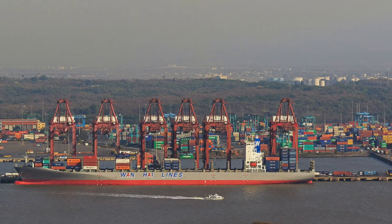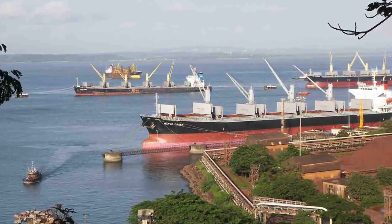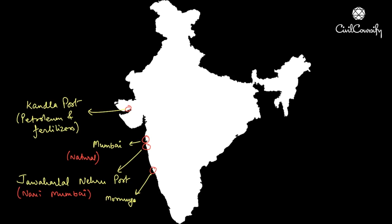Next is Jawaharlal Nehru port in Navi Mumbai. It was built as a satellite port to relieve the pressure of the Mumbai port. Next is the Murmugao port, which is also a natural harbour at the head of the Zawari River in Goa. It caters to the needs of Karnataka, Goa, southern Maharashtra and other adjoining areas.